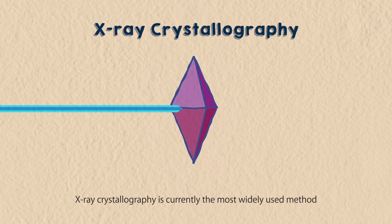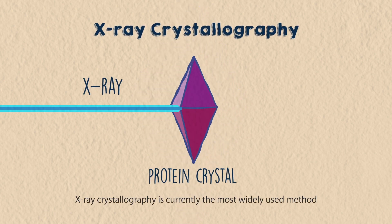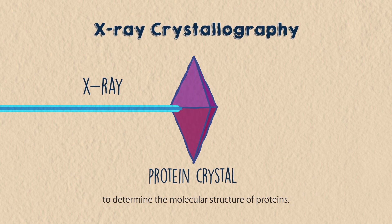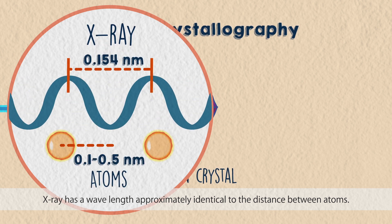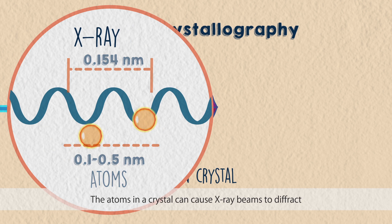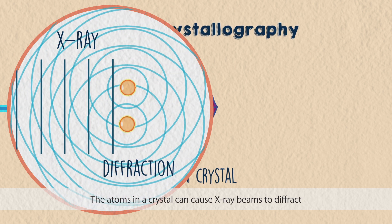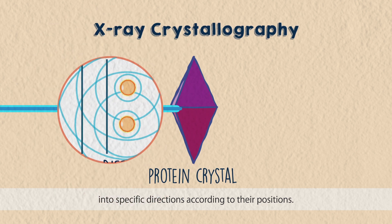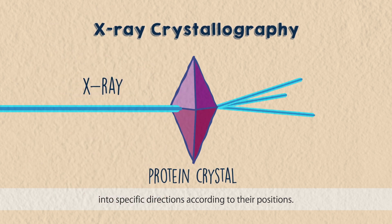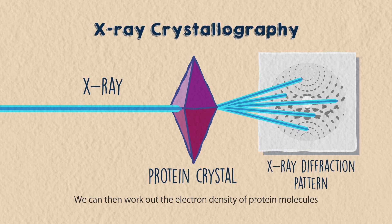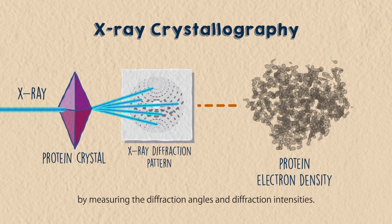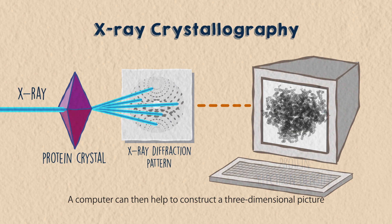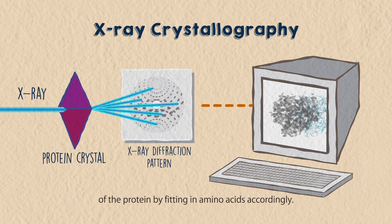X-ray crystallography is currently the most widely used method to determine the molecular structure of proteins. X-ray has a wavelength approximately identical to the distance between atoms. The atoms in a crystal can cause X-ray beams to diffract into specific directions according to their positions. We can then work out the electron density of protein molecules by measuring the diffraction angles and diffraction intensities. A computer can then help to construct a three-dimensional picture of the protein by fitting in amino acids accordingly.